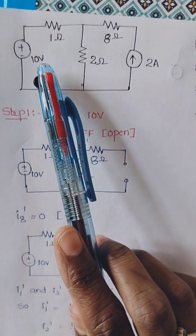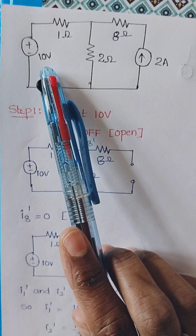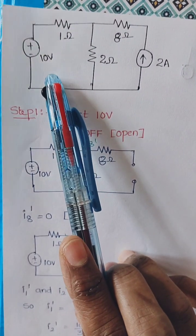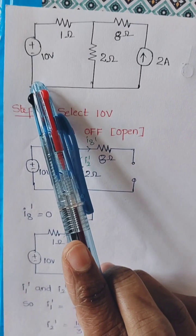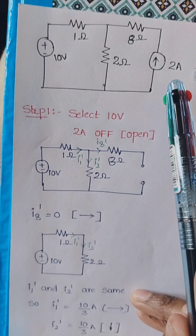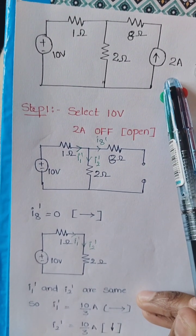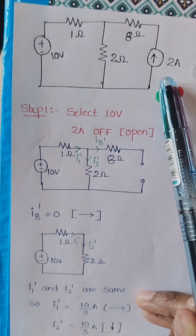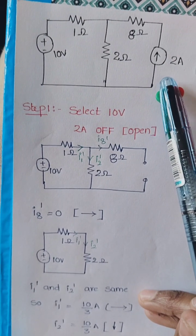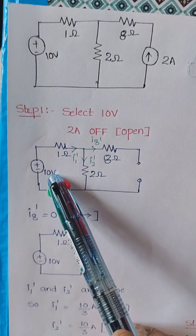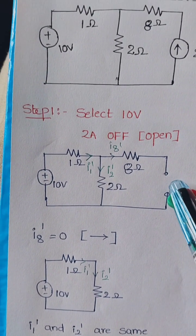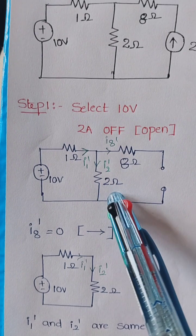Step 1: We have two sources — a 10 volt voltage source and a 2 ampere current source. First, we select the 10 volt source and deactivate the 2 ampere current source. Since a current source has internal resistance of infinity, it becomes an open circuit. So the 2 ampere source is open-circuited and the 10 volt source remains as-is.